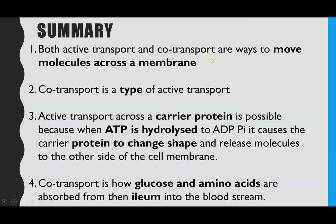In summary: both active transport and co-transport are ways to move molecules across a membrane. Co-transport is a type of active transport, so it will always involve ATP. Active transport is always through a carrier protein, and it's possible because ATP is hydrolyzed to ADP and inorganic phosphate (Pi). It's the attachment of Pi that causes the carrier protein to change shape and release molecules to the other side of the cell membrane. Co-transport is how glucose — and also amino acids — are absorbed from the lumen of the ileum into the epithelial cells, and then finally into the bloodstream.